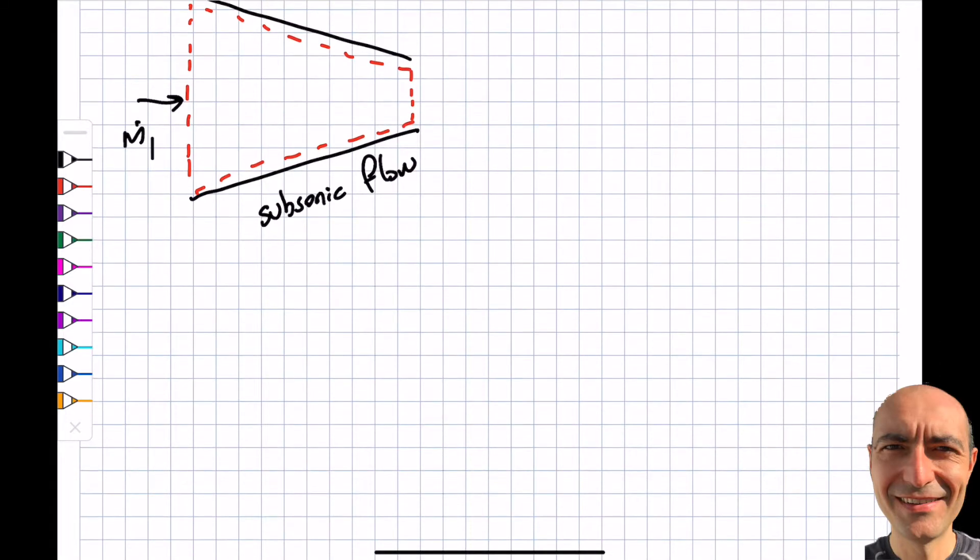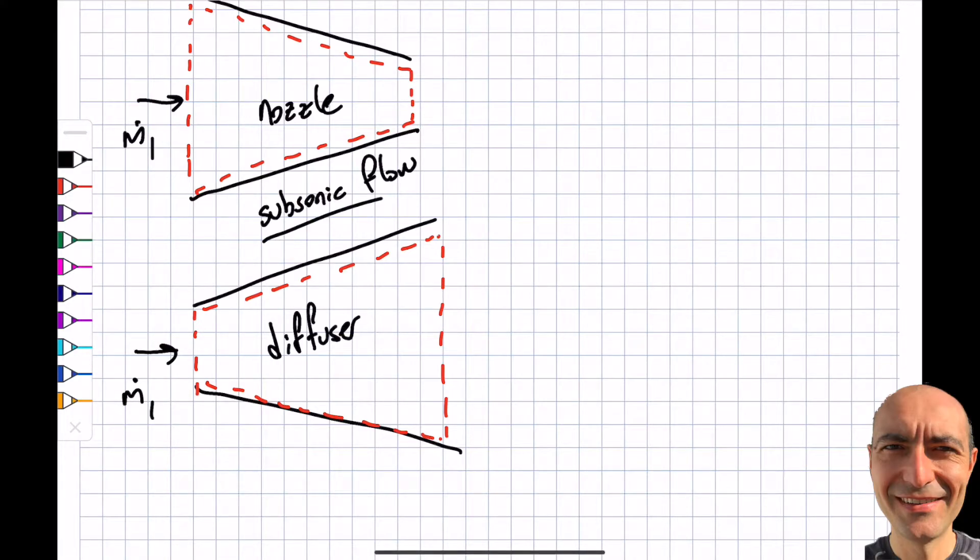And the diffuser is actually the reverse of it, in terms of the goal. But diffuser opens it up. And once it opens it up, what happens is the velocity goes down because the area goes up. So this is a nozzle, this is a diffuser. Again, both for subsonic flows, the shape of it.